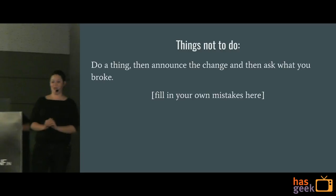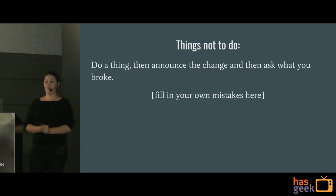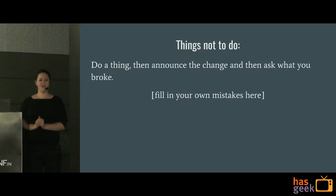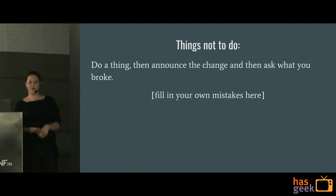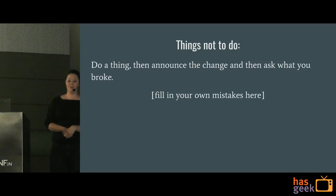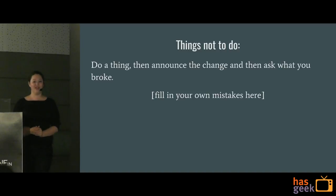This is the part where I get to talk about my own mistakes. The typical approach is: you do a thing, you announce a change, and you ask what you broke. I got annoyed one evening and decided we needed to have two-factor authentication turned on — and it was actually for Rackspace servers, which is almost as important as code. I turned around and said, 'We are turning this on for everybody, and if you've not turned this in, you're getting thrown out.' This was not the way I should have done it. I spent the next couple days cleaning up that mistake and documenting it better. Doing something, announcing the change, and then asking what you broke is probably not the best way of going about this.